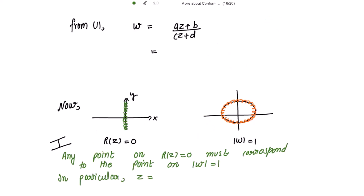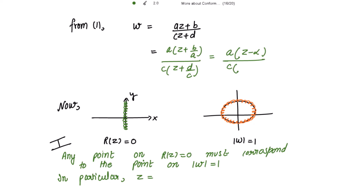From equation 1, w = (az + b)/(cz + d). Taking a common from the numerator gives (z + b/a), and taking c common from the denominator gives (z + d/c). Because -b/a is alpha, I write (z - alpha). And -d/c is -ᾱ, so the denominator has the sign positive, giving (z + ᾱ), because the negative sign cancels out.